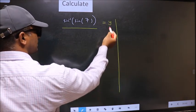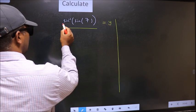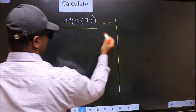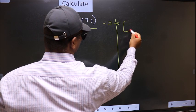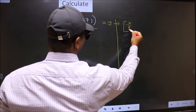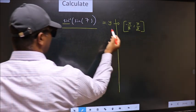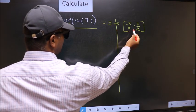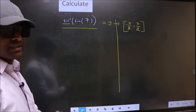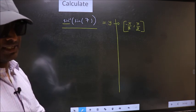And the condition is y should lie in the range of sin inverse, which is minus π by 2 to plus π by 2. Our answer should lie in this interval. Clear with this point.